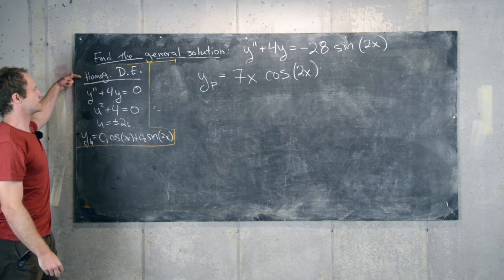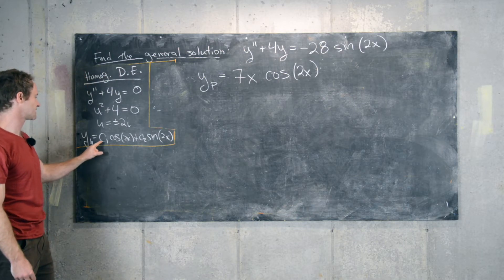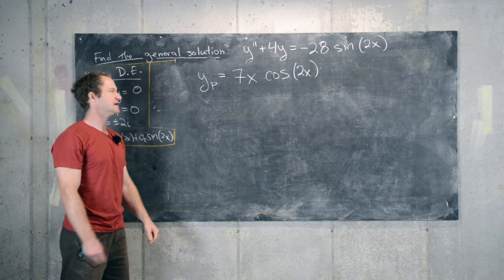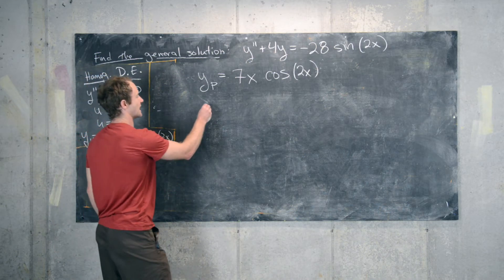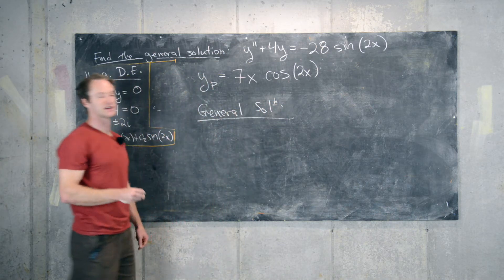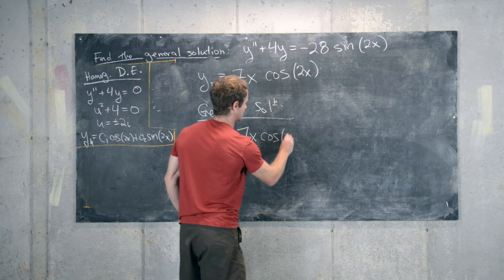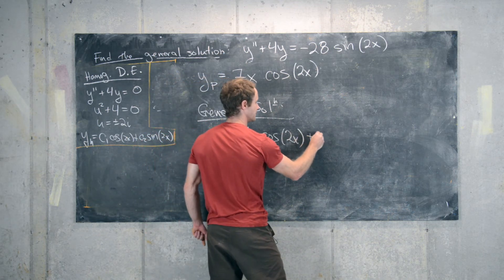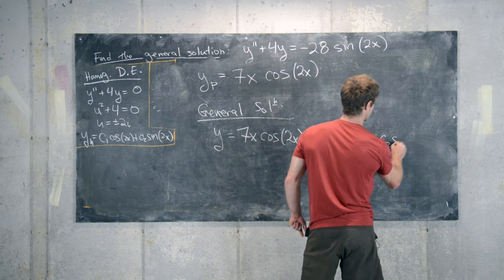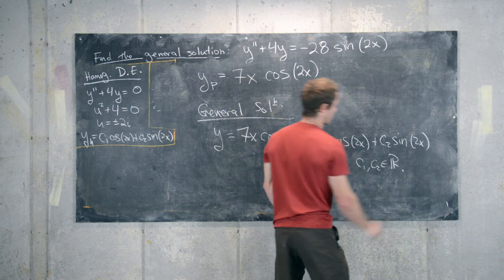The solution to the corresponding homogeneous differential equation was c1 cosine 2x plus c2 sine 2x, and our particular solution is 7x cosine 2x. The most general solution is the sum of these two: y equals 7x cosine 2x plus c1 cosine 2x plus c2 sine 2x, where c1 and c2 are arbitrary real numbers.